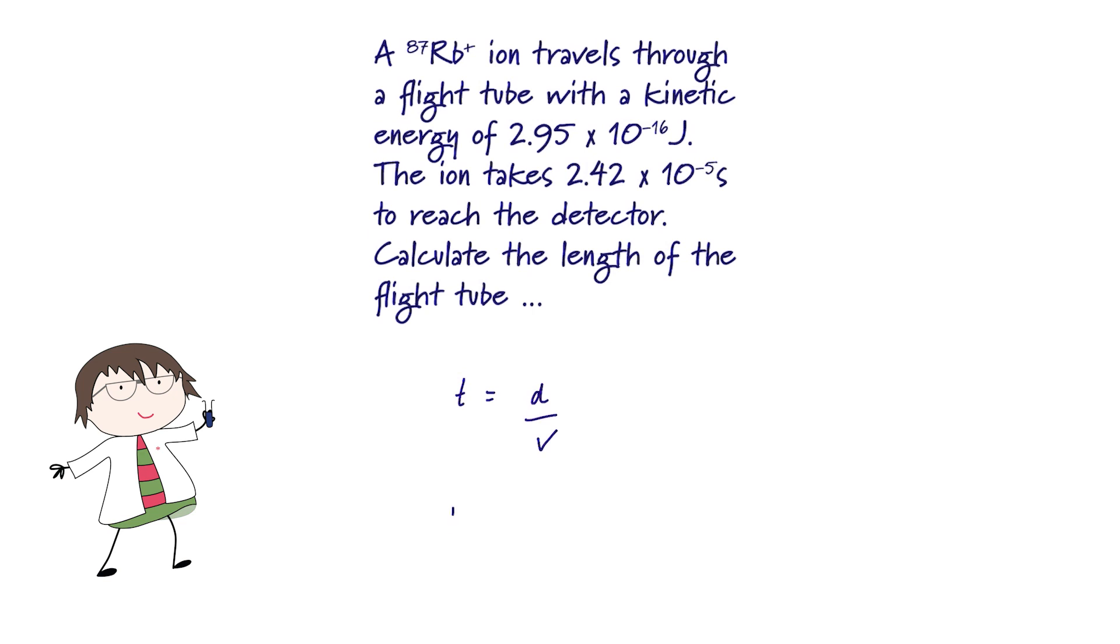And the second is that the kinetic energy of an ion travelling through the spectrometer is equal to half its mass times the square of its velocity.